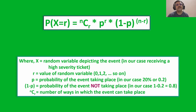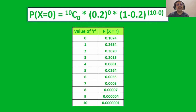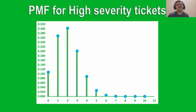We will not bother with the derivation of this equation. When we substitute the values, we get the following set of numbers. And when we plot these numbers on a graph, this is the graph we obtain. This represents the probability mass function graph, since we are again dealing with a discrete random variable.